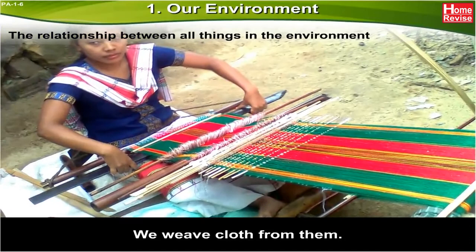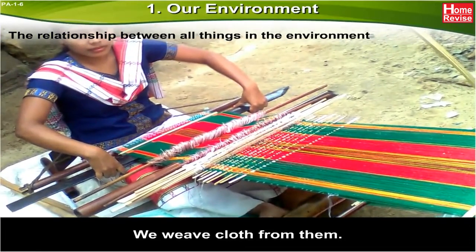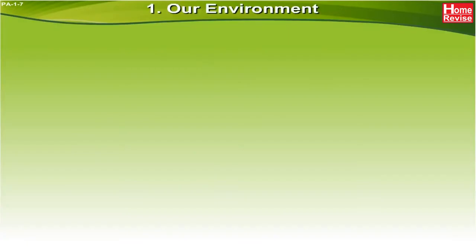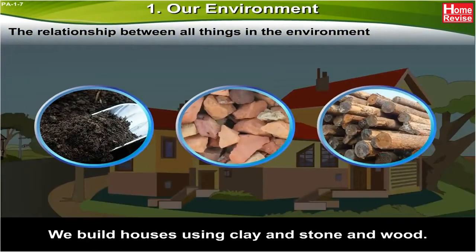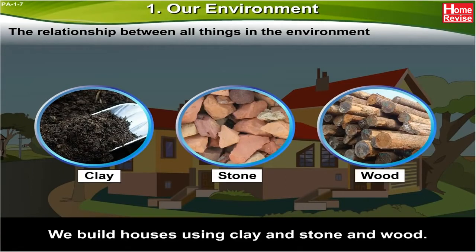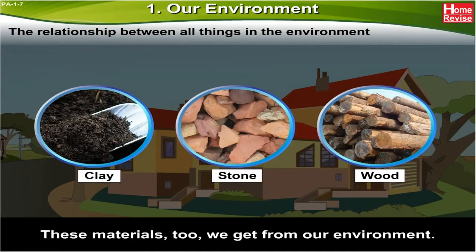We weave cloth from them. We make things like mats, baskets, and paper from materials in our environment. We build houses using clay, stone, and wood. These materials too we get from our environment.